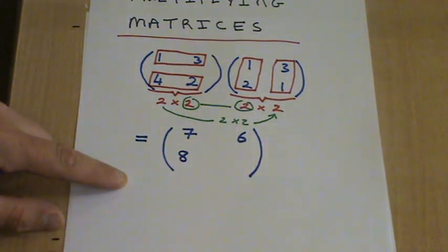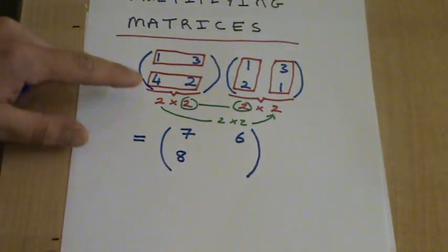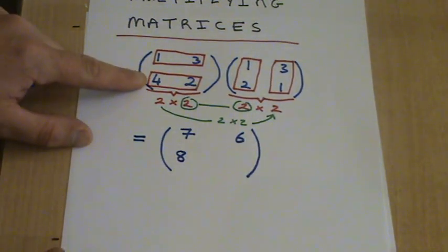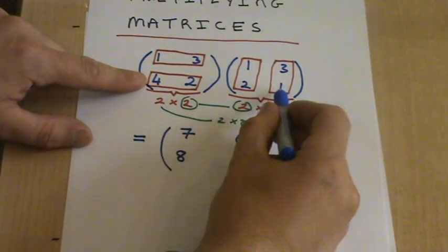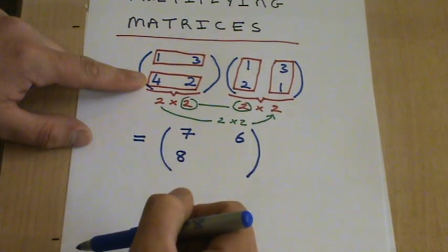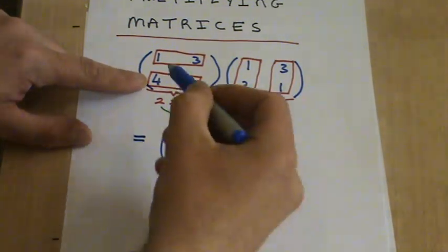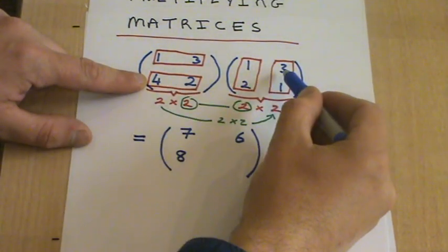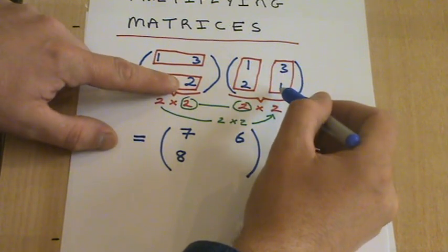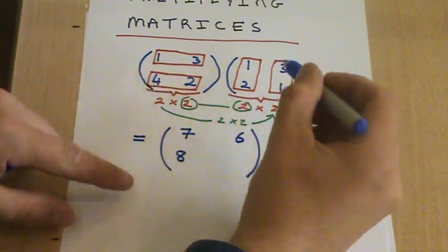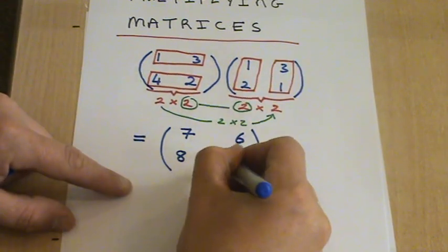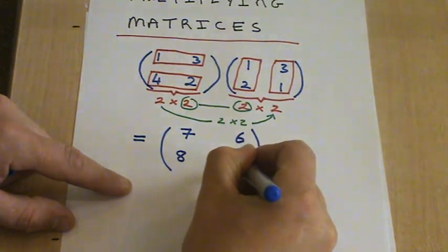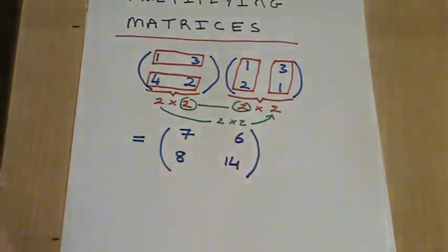And finally, to get the last entry, we're going to use this bottom row by the second column. So we multiply the 4 by the 3, which is 12, plus 2 by 1, which is 2, and altogether that gives you 14. That's your resulting matrix.